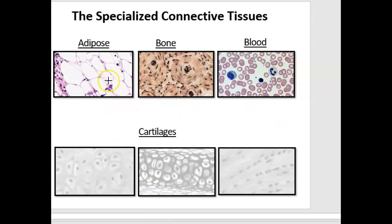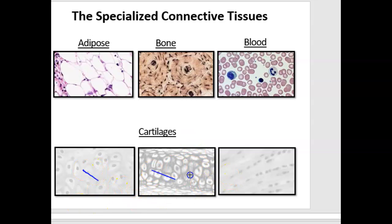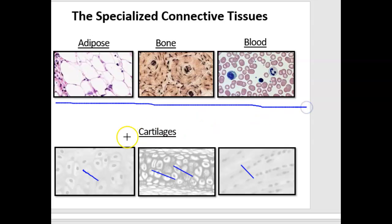The specialized connective tissues include adipose, bone, blood, and cartilages. We're going to start with these first three: adipose, bone, and blood.